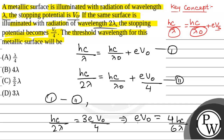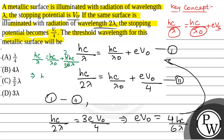We now put the value of eV0 back into equation 1. We have hc/λ = hc/λ0 + 4hc/6λ = hc/λ0 + 2hc/3λ. From here, hc/λ0 = hc/λ - 2hc/3λ = hc/3λ, so λ0 = 3λ. The threshold wavelength for this metallic surface is 3 lambda, which is option D.